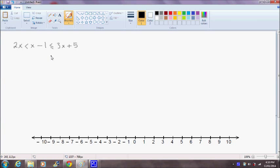Hello and welcome. In this video, I'm going to demonstrate how to solve a combined inequality. As you can see here, we have the expression 2x is less than x minus 1, which is less than or equal to 3x plus 5.